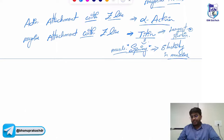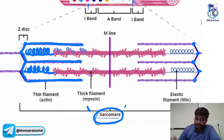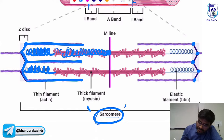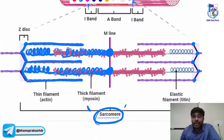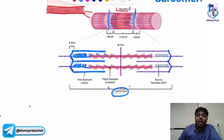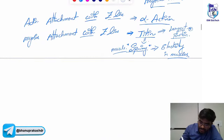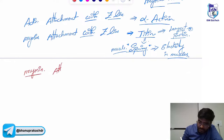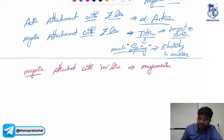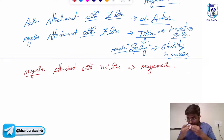Now look at the myosin — the myosin is attached in the center with which line? The M line. Myosin in the center is attached with the M line, with the help of a protein called myomesin. Myosin is attached to the M line with the help of myomesin.